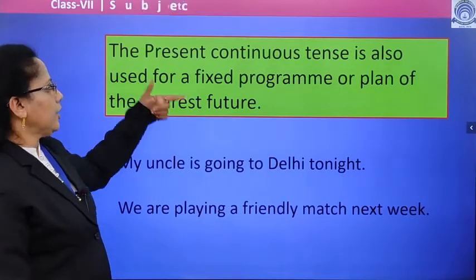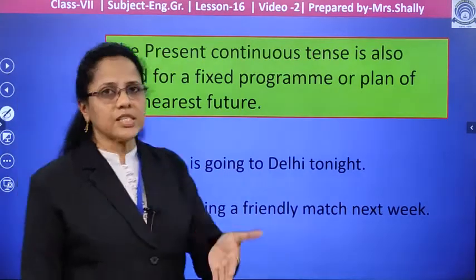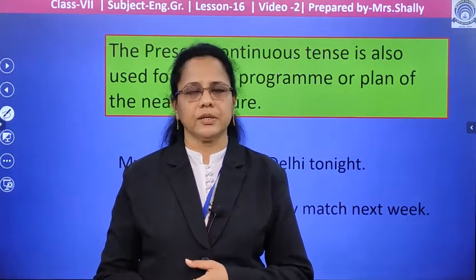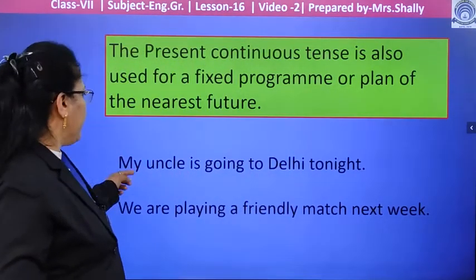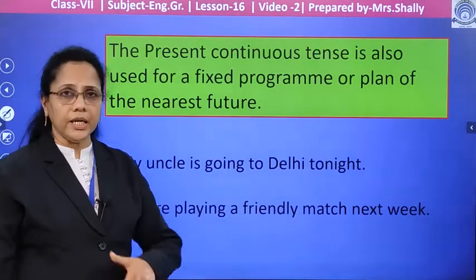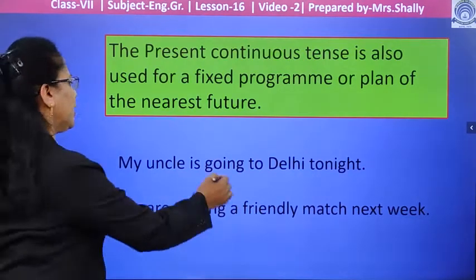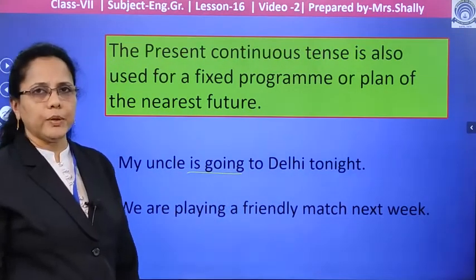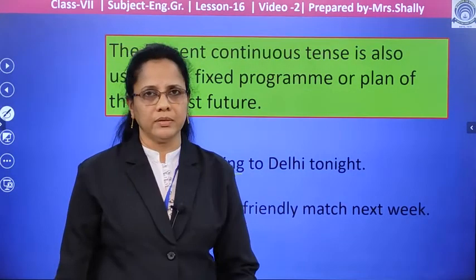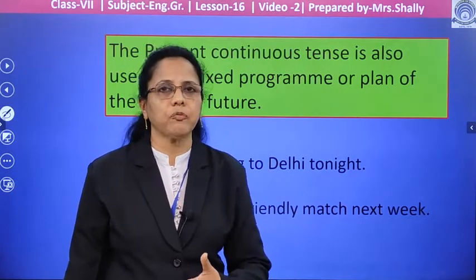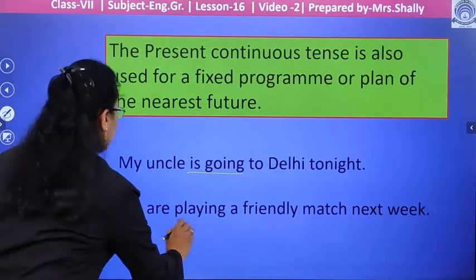Present continuous tense is also used for a fixed program or plan of the nearest future. For example: 'My uncle is going to Delhi tonight' — that action will happen in the near future, so it is expressed in present continuous tense. Similarly, 'We are playing a friendly match next week' — that action will happen in the near future, so it is also expressed in present continuous tense.